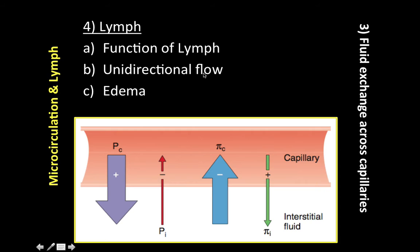Regarding unidirectional flow: we have one-way flap valves in the lymph that permit interstitial fluid to enter but not leave the lymph vessels. Flow through larger lymphatic vessels is also unidirectional. This is aided by the valves and skeletal muscle contraction. That's why patients lying in bed for a long time can develop edema, then DVT, and then PE — which is why we encourage ambulation and use compression stockings during surgery.